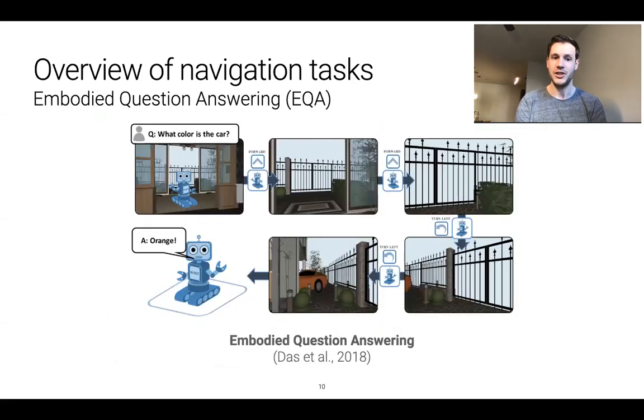And finally we have embodied question answering where the agent is given a question in natural language such as what color is the car and then must navigate throughout the environment such that it can gather sufficient information to answer the question.